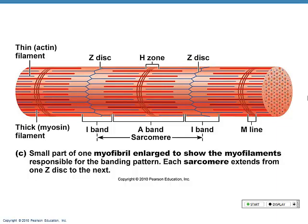From Z disk to Z disk, between one sarcomere and the next, we have a light area called the I band — which contains just thin filaments. In the A band it's darker because we have an overlap of thick and thin filaments. Right in the center of an I band is the Z disk, which is the end of one sarcomere and the beginning of the next.